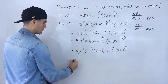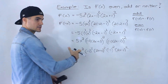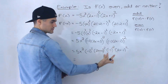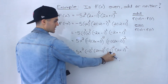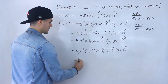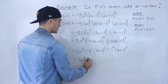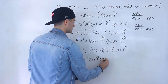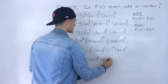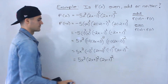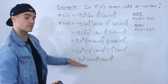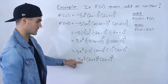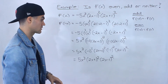Negative 1 squared is just positive 1, so these can actually just go away. We end up getting 5x cubed times 2x plus 1 squared times 2x minus 1 squared. That's the fully simplified form for f of negative x — can't really simplify this any further.